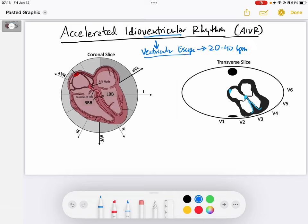But in this case, as its name also implies, this is an accelerated rhythm. So this is essentially going to be a ventricular escape rhythm, but instead of being 20 to 40 beats per minute, it's going to be maybe 40 to 100 beats per minute.